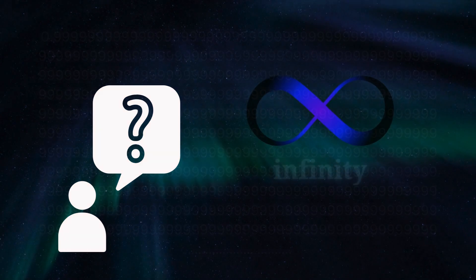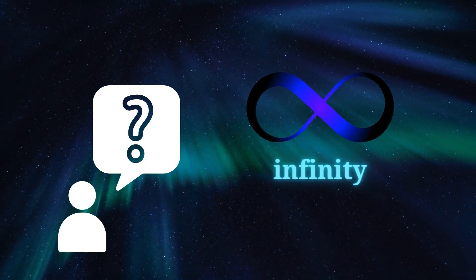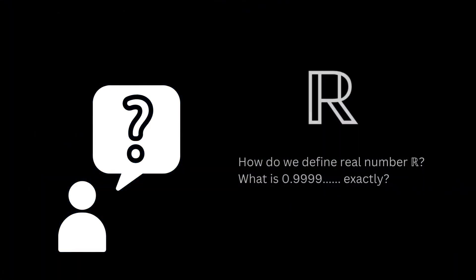But if you're still not convinced, no worries, let me introduce you to a more advanced and fascinating proof used by mathematicians. Our confusion with this problem stems from understanding the number 0.9 recurring. What does it mean to have infinitely many digits after a decimal point? What is infinity? At this point, you might even wonder what exactly is real number.